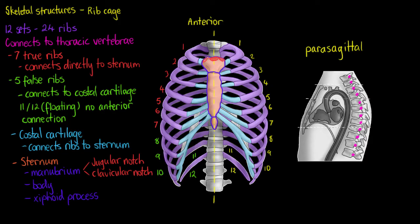They're located here and here. The clavicular notch is the part of our manubrium that articulates with our clavicle, more commonly referred to as our collarbone. Between the body of the sternum and the manubrium we find the sternal angle.